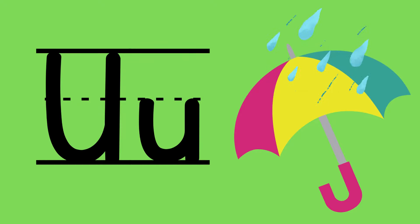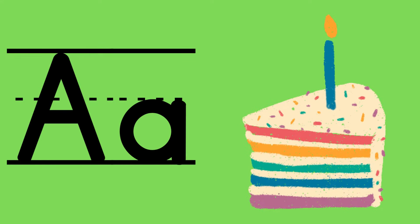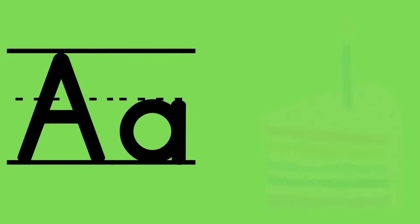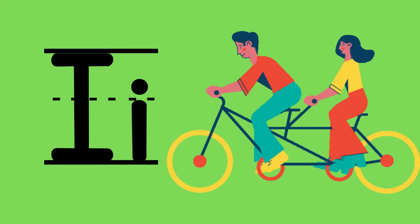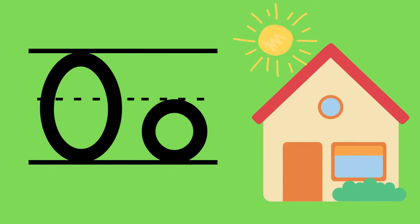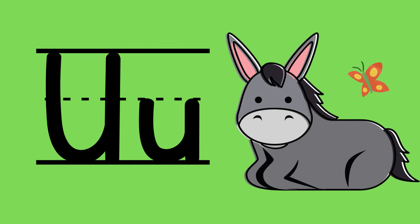But the long sounds can be said in a long way. So 'ā' cake, 'ē' tree, 'ī' bike, 'ō' home, and 'ū' mule. See how we can say those in a long way? Thanks for watching.